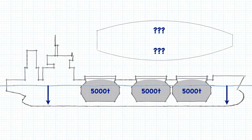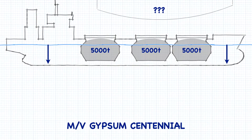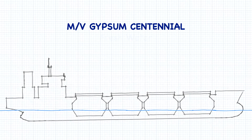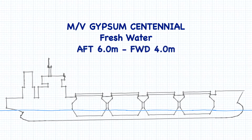The basic method to calculate this is pretty much the same, with a few added steps in between. Don't worry, we've already learned all the skills necessary to do this. To demonstrate it, let's use the Gypsum Centennial. If the ship is floating in fresh water with drafts 4 meters forward and 6 meters aft, the initial trim would be 2 meters by the stern.